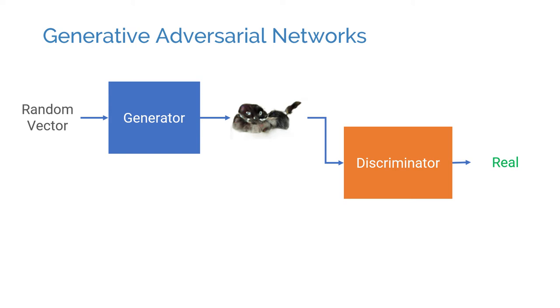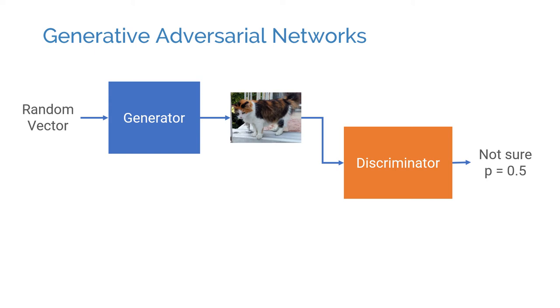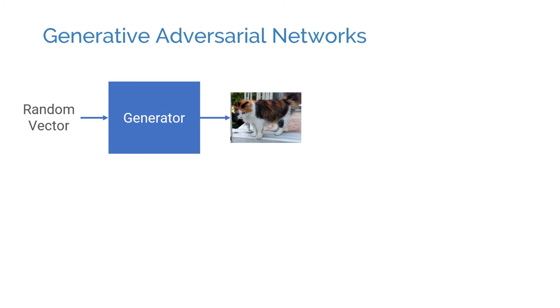Ideally, they would come to an equilibrium where the generator generates perfectly realistic samples and the discriminator always outputs a 0.5 probability. Once the training is complete, you can throw away the discriminator and use the generator to generate new samples.